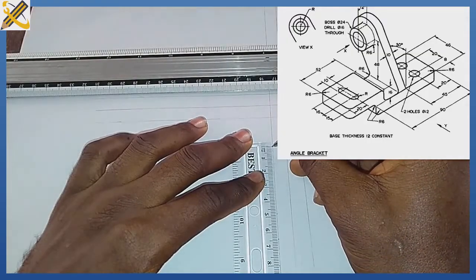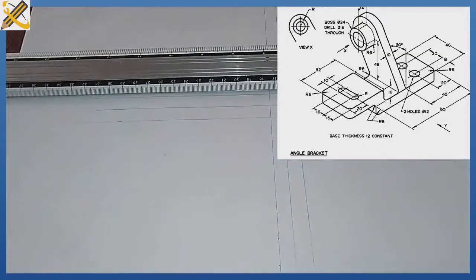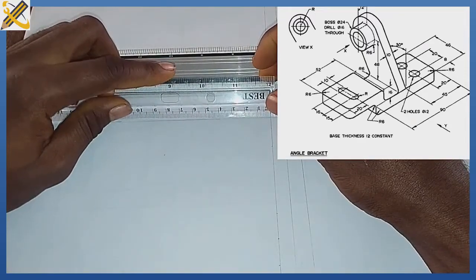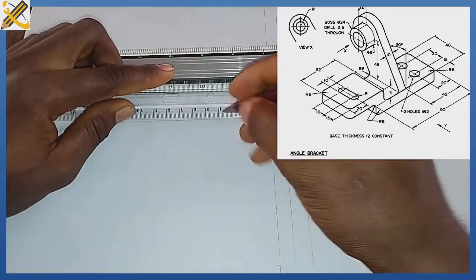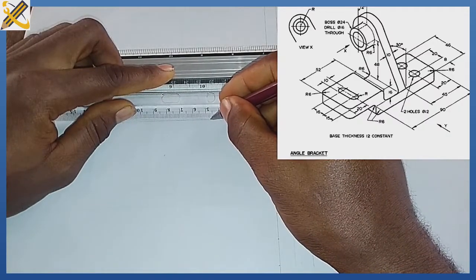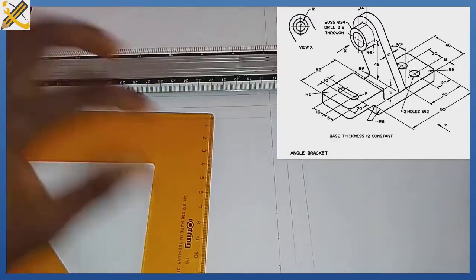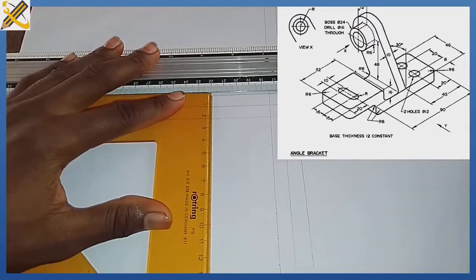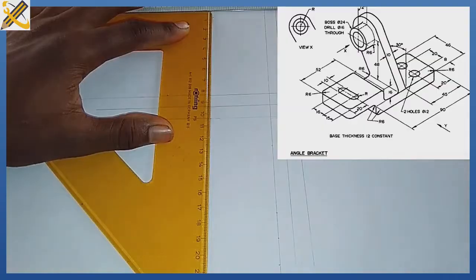I'm measuring it also. So then after doing that, I'm going to measure on the horizontal plane. On the horizontal plane, I am measuring 46, 46. So this is my 46 on the horizontal plane. Then I'm going to draw out the lines. The 46 on the horizontal plane, I'm going to draw it down vertically.